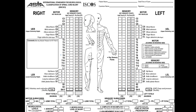Starting with the sensory level on the right, it's T1. Sensory on the left is C8. For the motor level, it is C8 on the right and C7 on the left. The neurological level of injury is the most cephalic of those, so it is C7.